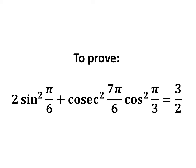In this video, we will learn to prove the equation 2 times square of sine of pi upon 6 plus square of cosecant of 7 times pi upon 6 times square of cosine of pi upon 3 is equal to 3 upon 2.